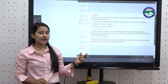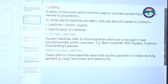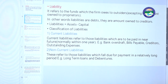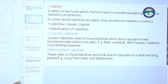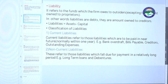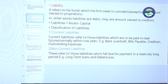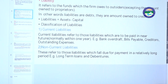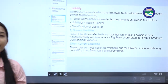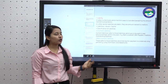Now the classification of liabilities: there are two types — current liabilities and non-current liabilities. Current liabilities are those liabilities which are to be paid in the near future, normally within one year. Examples include bank overdraft, bills payable, creditors, and outstanding expenses.